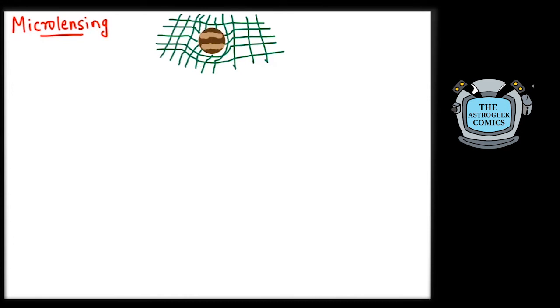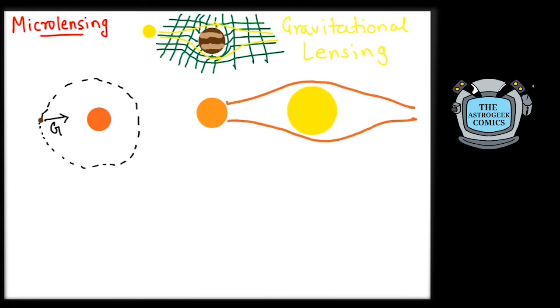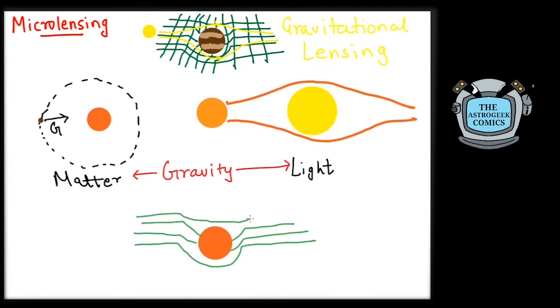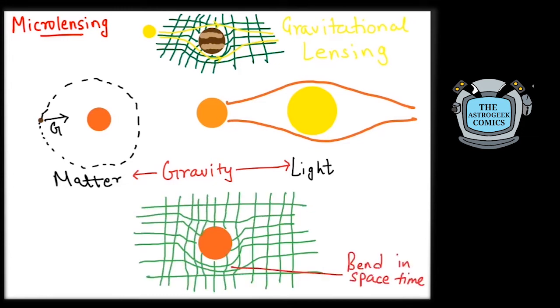The second method is called microlensing. This method involves the concept of gravitational lensing. Einstein showed that like matter, even light gets bent by gravity. This is because gravity is actually the result of the bending of space-time fabric by a massive body. Since light itself travels in this fabric, the bending makes the path of the light to also bend.